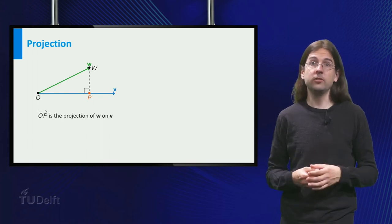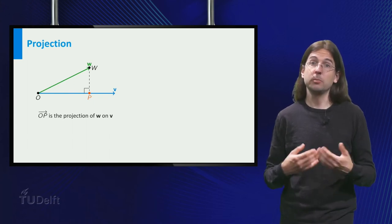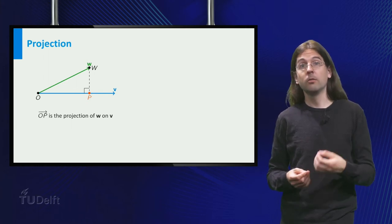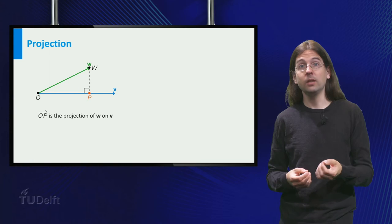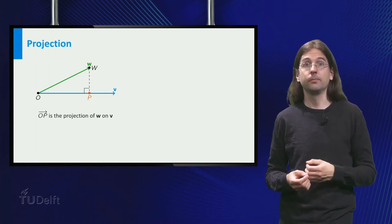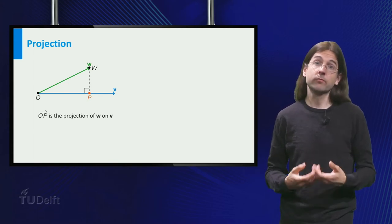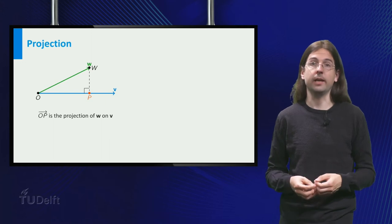Orthogonal is a fancy word from ancient Greek, meaning perpendicular. To determine the cosine we need the lengths of op and of w, so we need to know which point p is.